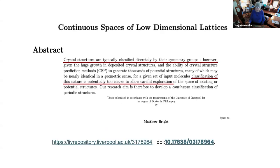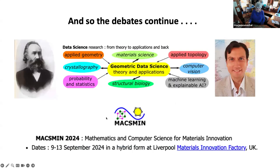I just want to close by mentioning one very nice paper: Matthew Bright's thesis last year on continuous spaces of low-dimensional lattices. He points out that crystal structures are typically classified discretely by their symmetry groups — that goes back to Polya and Fedorov. However, classification of this nature is too coarse to allow for careful exploration of the landscape of the crystal world. Therefore we want to develop a continuous classification for periodic structures, which he has done for two dimensions. So the debates continue, and here we are at the 5th Max Min conference. Thank you very much, Marjorie.